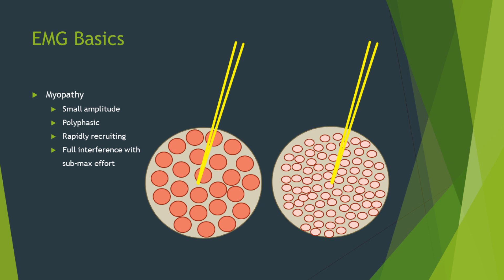In a myopathic process, the muscle fibers start shrinking down. This reflects itself on the oscilloscope by the amount of current that these muscle fibers can generate being smaller in amplitude than in the healthy state. They're also polyphasic. If you look at the diagram on the right-hand side, you now have more of these shrunken muscle fibers crowded around the needle, and so you're getting an overlap of more action potentials relating to the contraction of these muscles.